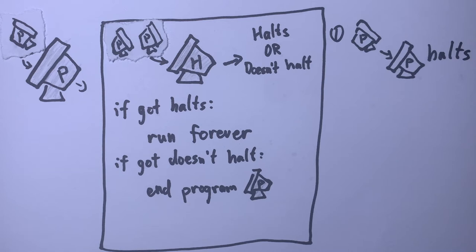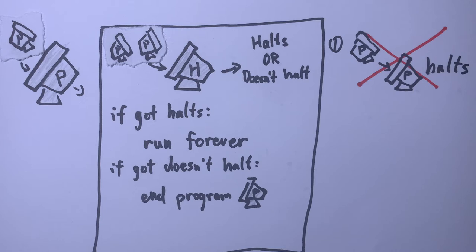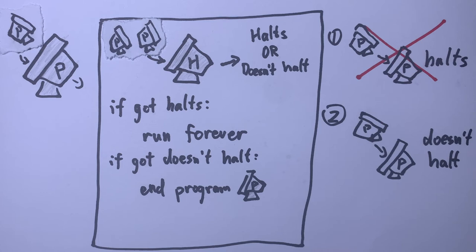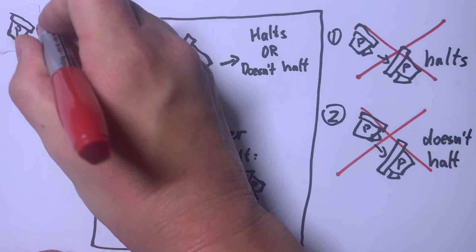Okay, what about if P doesn't halt on its own source code? Well, then the instructions tell us to halt. So P does halt on P. Again, that contradicts our assumption. In other words, this program P cannot exist because then running P on itself can neither halt nor not halt.